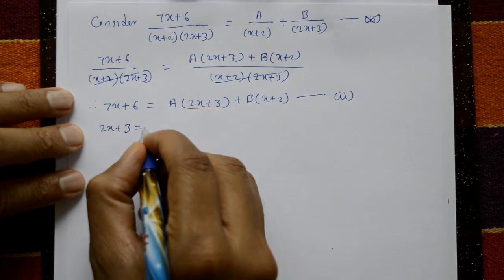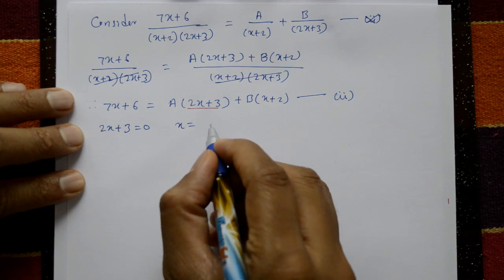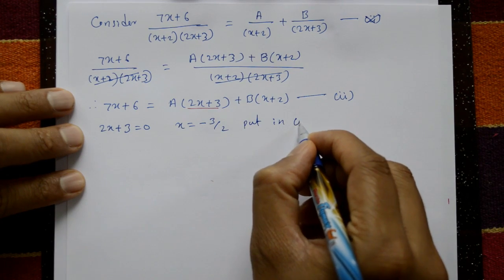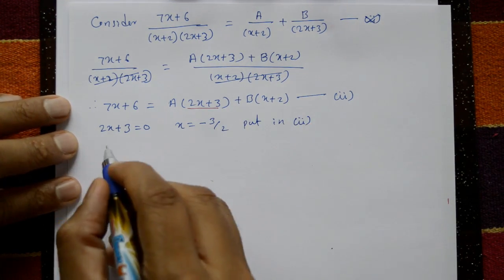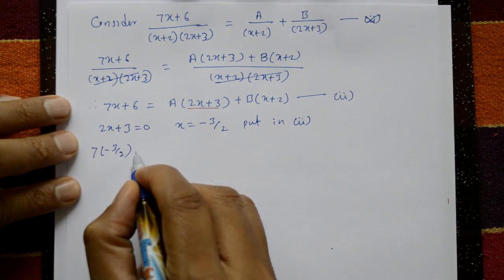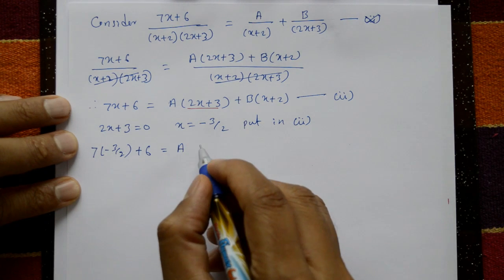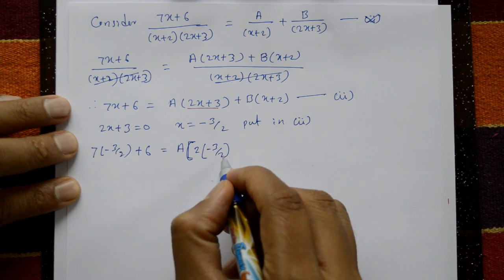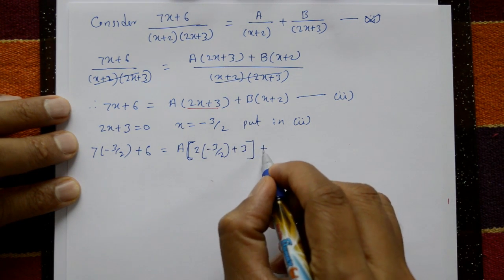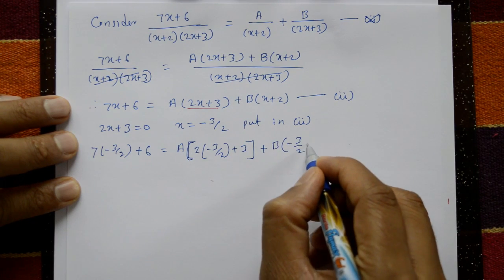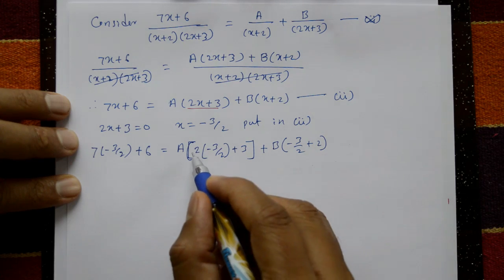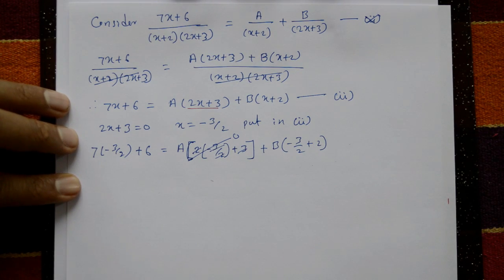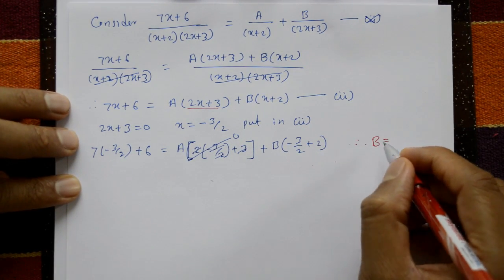Take 2x+3 = 0, so x = -3/2. Put x = -3/2 in equation number 2: 7(-3/2)+6 = A(2(-3/2)+3) + B(-3/2+2). The A term cancels to 0, so therefore B = -9.